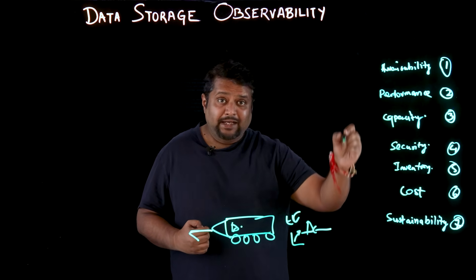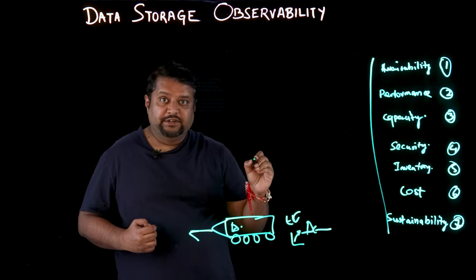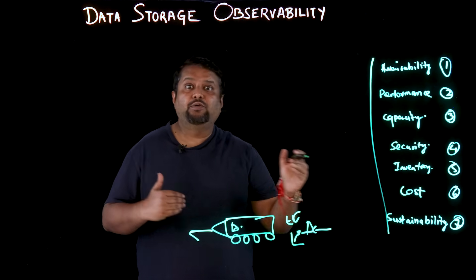The seventh pillar is sustainability. Is my storage infrastructure aligned with respect to power consumption? What is it consuming in terms of carbon emissions? Is my infrastructure aligning with my carbon goals? This is where a storage observability tool will help align my infrastructure.